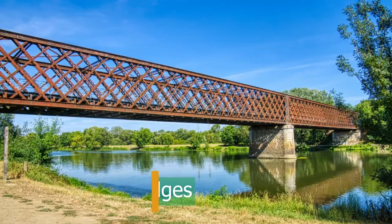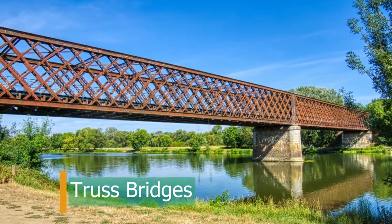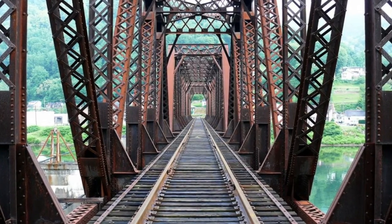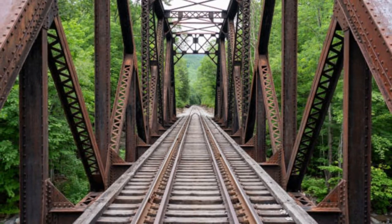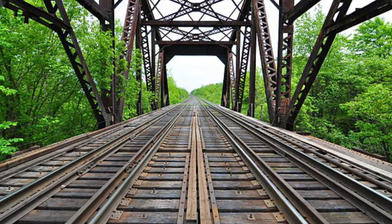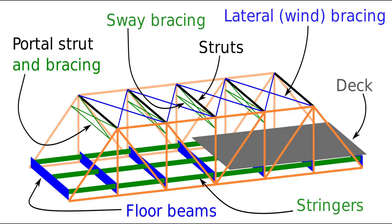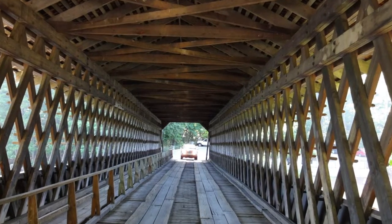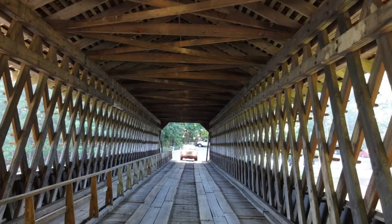Truss bridge. A truss is a structure that transfers loads as axial forces. It does not subject to bending and shear actions. Depending on the arrangement of the trusses, there are different classifications. The main components of the truss bridge are floor beams, stringers, deck, struts, lateral bracing, sway bracing, portal strut and bracing, and deck bracing. The truss could be constructed from timber, iron, or steel. It consists of vertical and diagonal members.